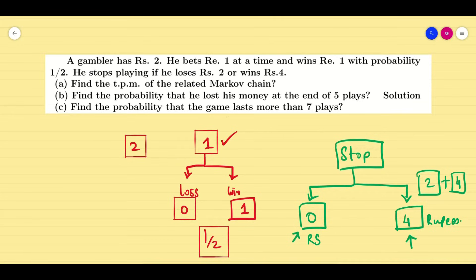Now this is the condition given to us. Find the transition probability matrix, first of all for the Markov chain. The second question: what is the probability that he will lose all money at the end of 5 plays? The third question: find the probability that the game lasts more than 7 plays — that means what is the probability that the game will continue after 7 plays. This problem is going to be a little challenging because you cannot use a calculator.